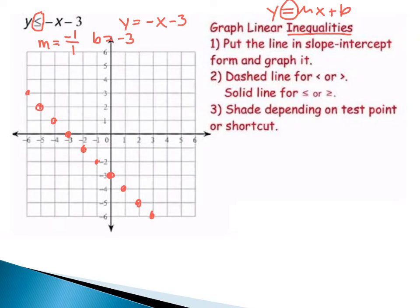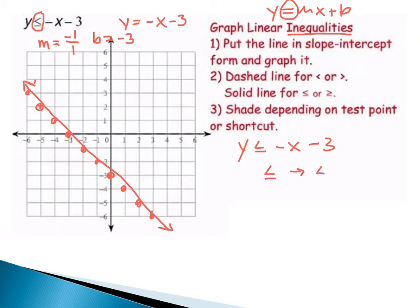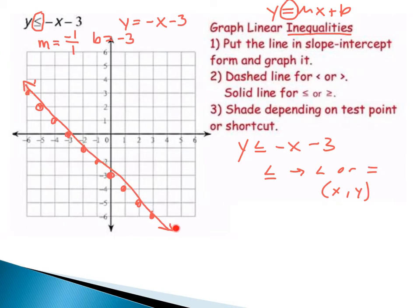Now graph the line through all those points. We are dealing with the inequality y is less than or equal to negative x minus 3 — the inequality less than or equal to, which means it could be less than or it could be equal to. Any point that lies on the line is going to satisfy the equal-to part of the inequality. So all the points I have drawn hold true.